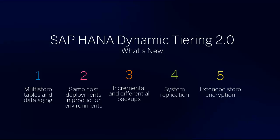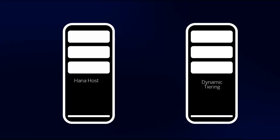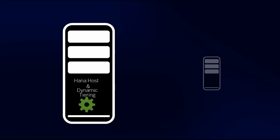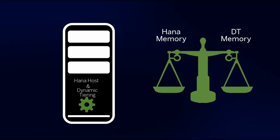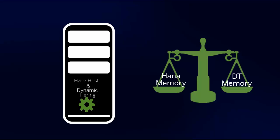Next, we'll look at same host deployments. Prior to 2.0, SAP HANA and Dynamic Tiering each required a dedicated host. But now you can run both on the same host, eliminating the need for a dedicated second host. Since HANA and Dynamic Tiering now share the memory on the host, you need to balance these resources to optimize performance. Several configuration parameters are available to assist with this.